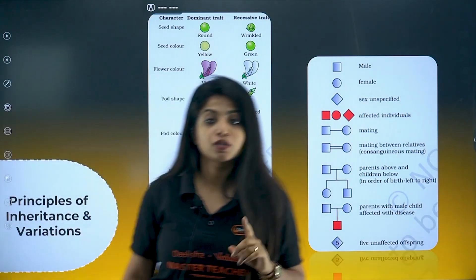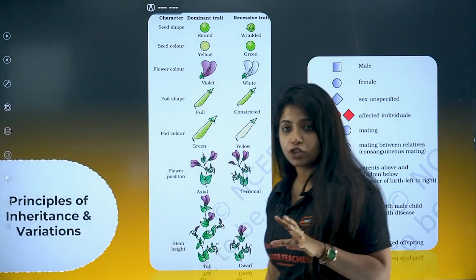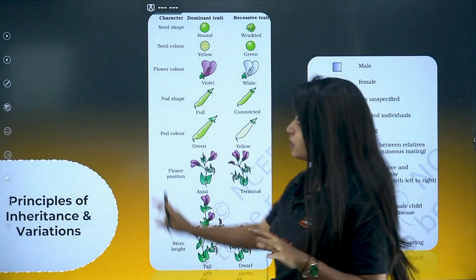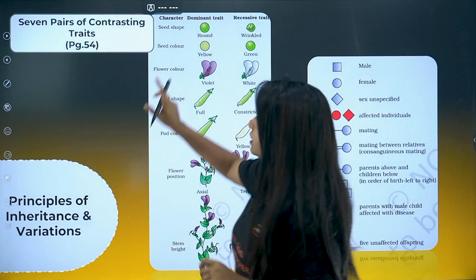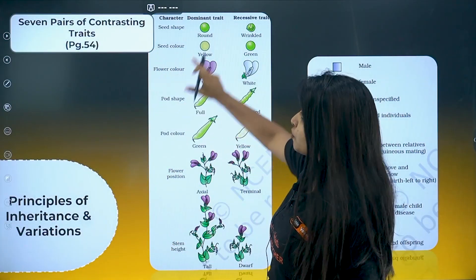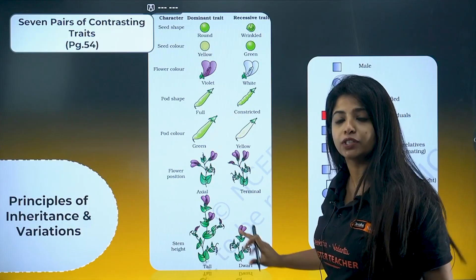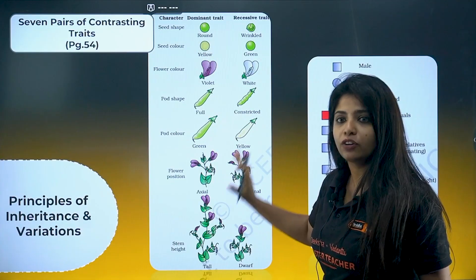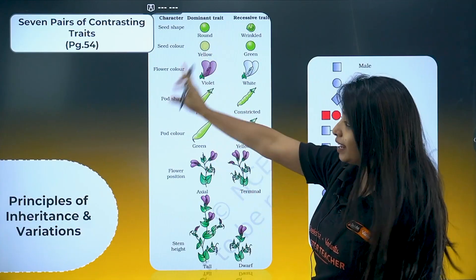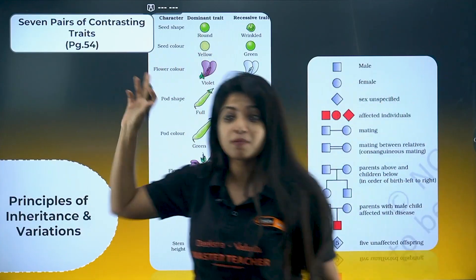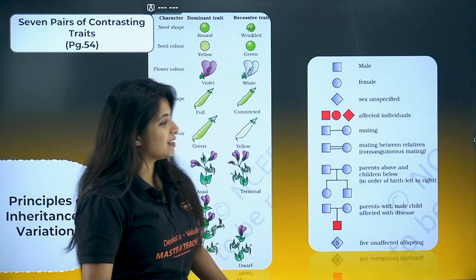The first chapter is Principles of Inheritance and Variation — the most important chapter. The seven pairs of contrasting traits, all of them are important. Go through it really, really well. It's on page number 54 of your NCERT.